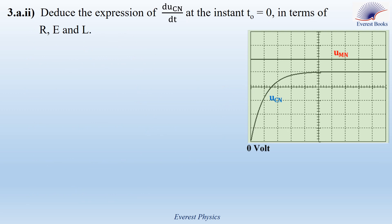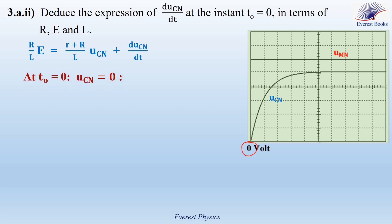Part 3A-II: Deduce the expression of dUCN/dt at instant t=0 in terms of R, E, and L. Using the equation proved in the previous step and looking at the curve: at time zero, UCN equals zero. Replacing UCN by zero, we conclude that dUCN/dt at time zero equals R·E/L.